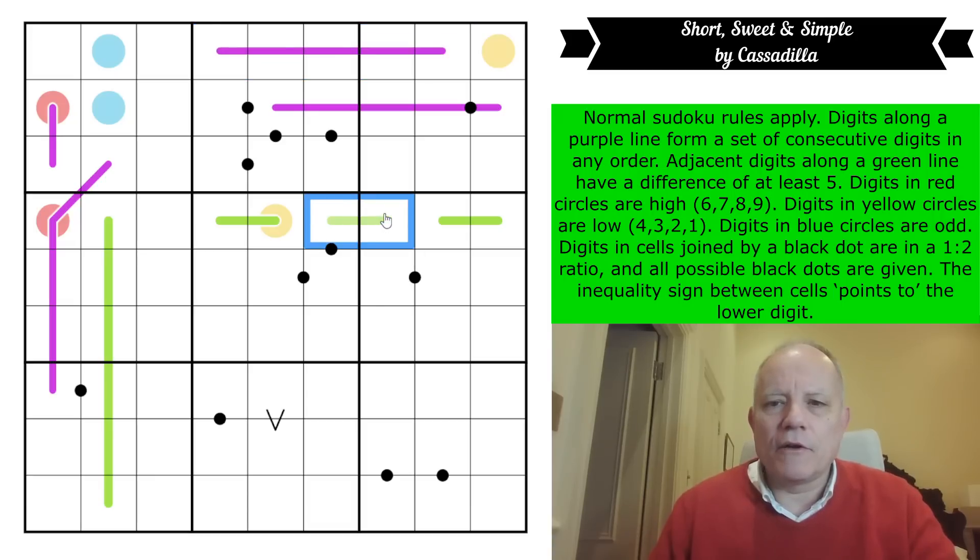Adjacent digits along a green line have a difference of at least five. So that could be one six or one nine, but it couldn't be three, seven. Digits in red circles are high, six, seven, eight, or nine. Digits in yellow circles are low, four, three, two, or one.